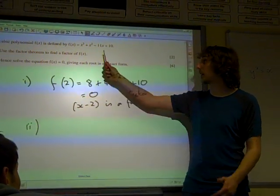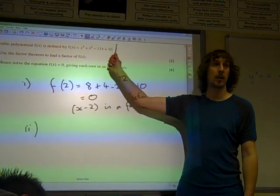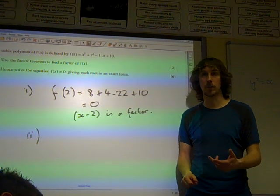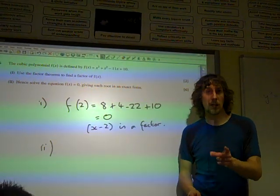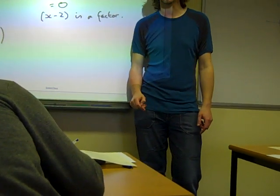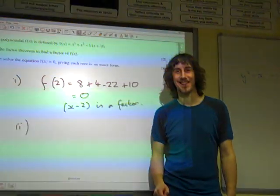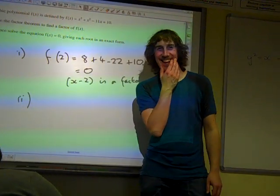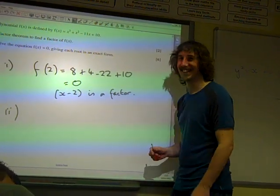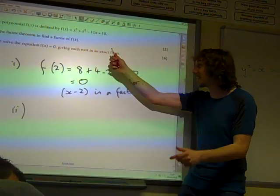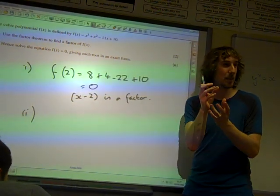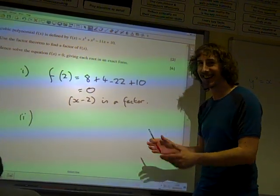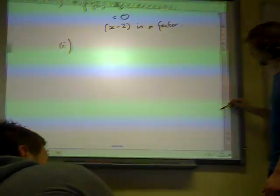So a really safe way of doing it is to set out the long division x minus 2 into that expression there and see if we can find the other factor and then try and factorize that. The other thing that you could do is you could just try and continue with the factor theorem, try a few more values and see if they work. If we do that, that could be a risk because this says in exact form and that hints to me that maybe the other roots aren't nice integers. Let's see if we can do it with that method for finding the other factor.